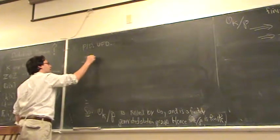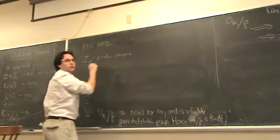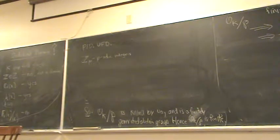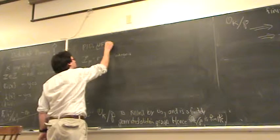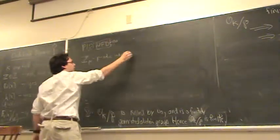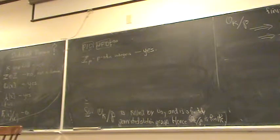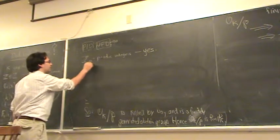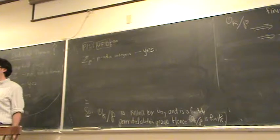What about Z_p, the ring of p-adic integers — is that a Dedekind domain? Yes, it is a Dedekind domain because it's a completion of a Dedekind domain. It's also a PID: every ideal is principal in Z_p. And it's Noetherian because every ideal is finitely generated — in fact, principal. So that's good.